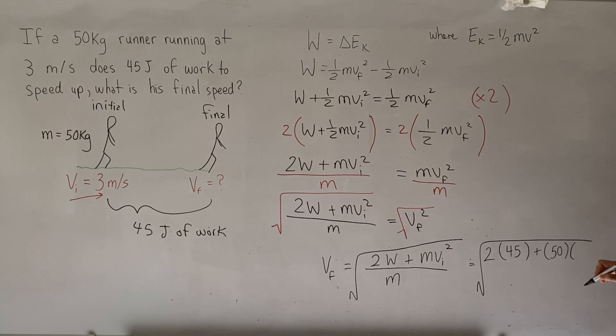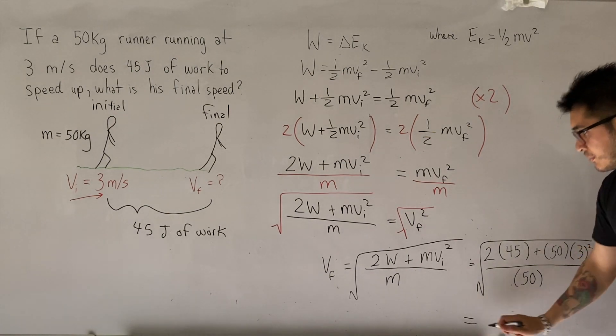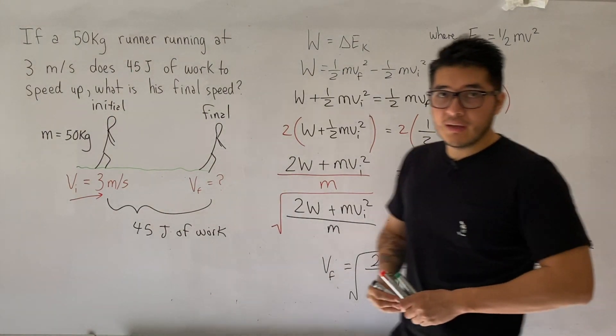Speed should be meters per second, which it is, so 3 squared. All divided by the mass, which is 50. So let's plug this into the calculator and see what we get.